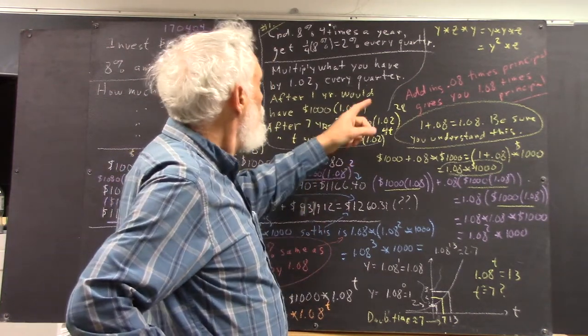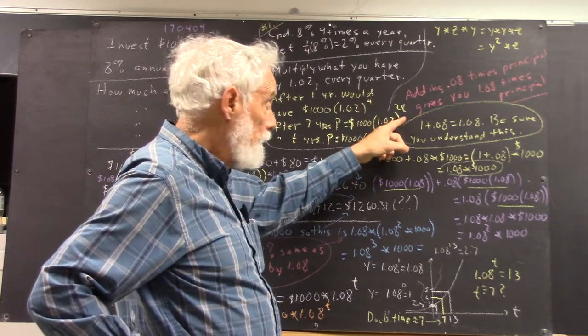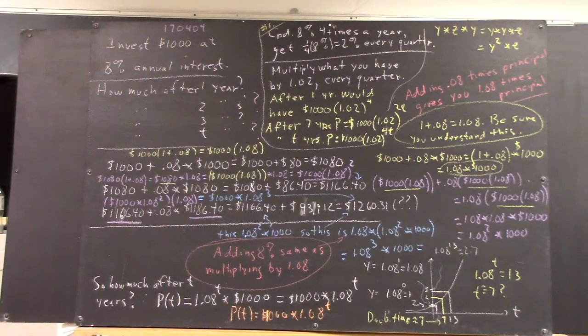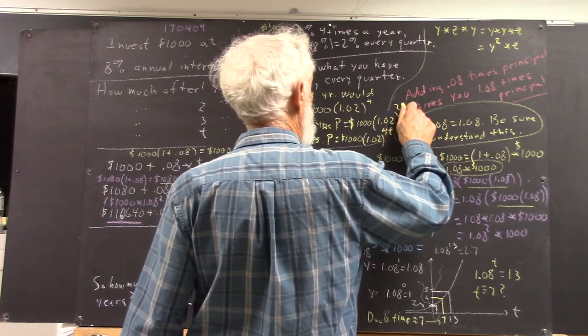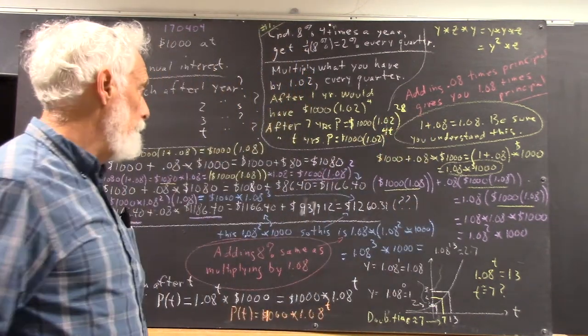Okay, anyhow, four times a year, seven years, you're going to have done that 28 times. And that's a really bad looking 28. Let's make sure we, I'm probably going to make it worse, but let's see. Maybe that looks a little more like an eight.